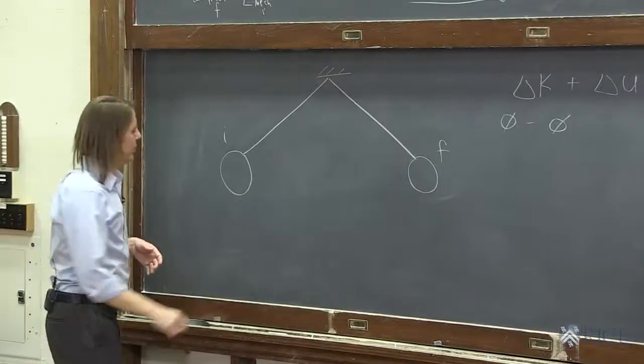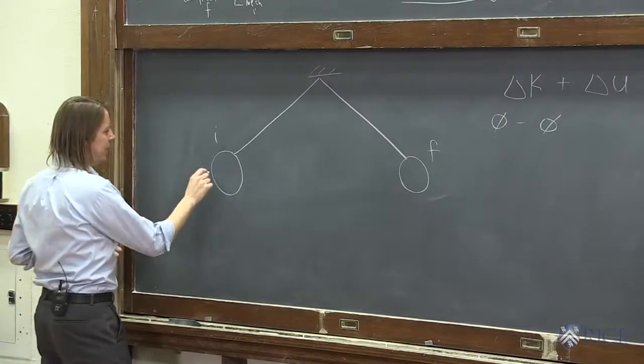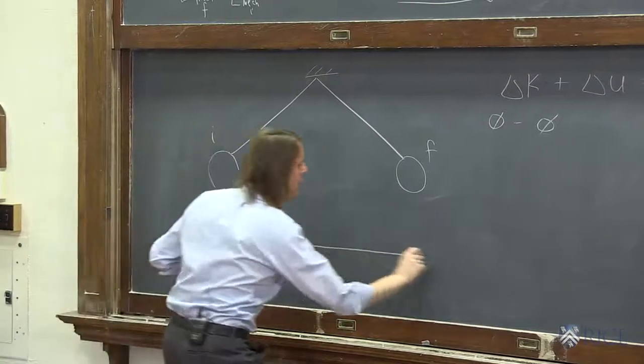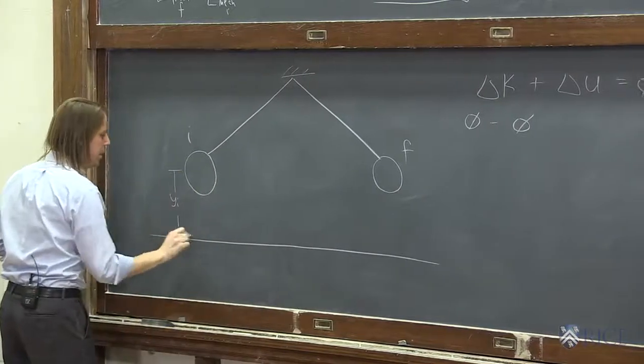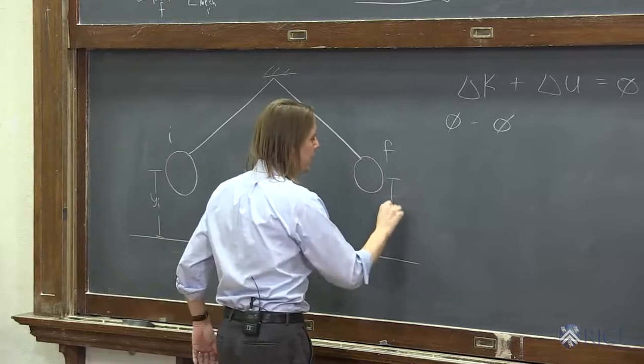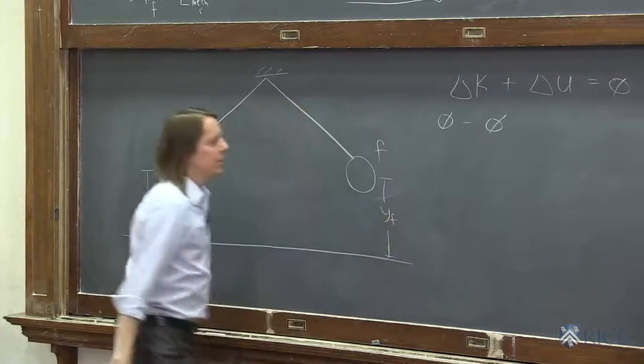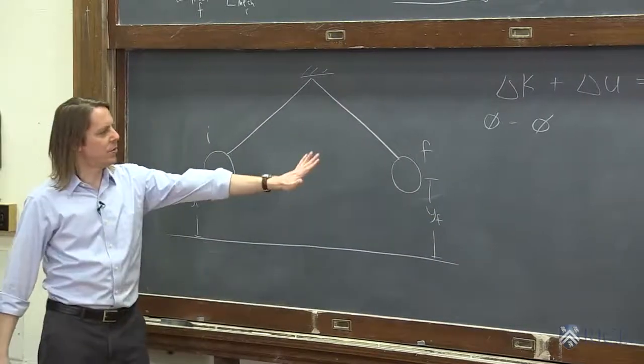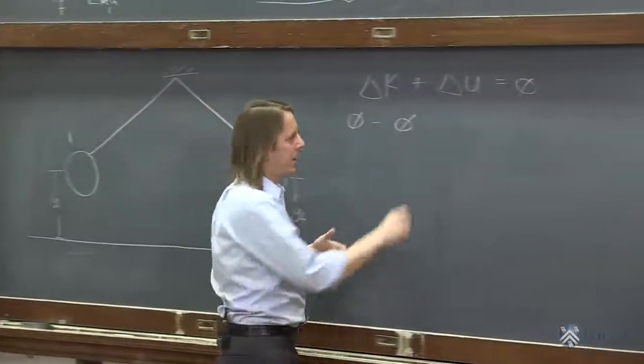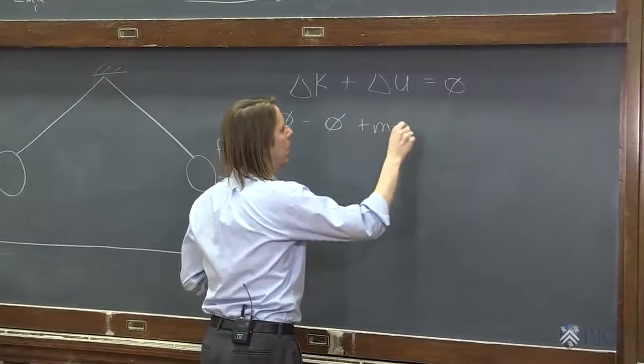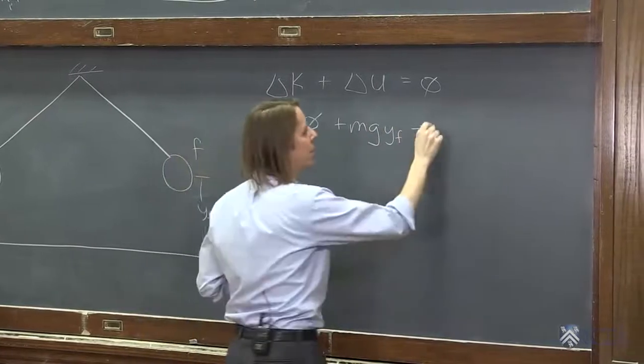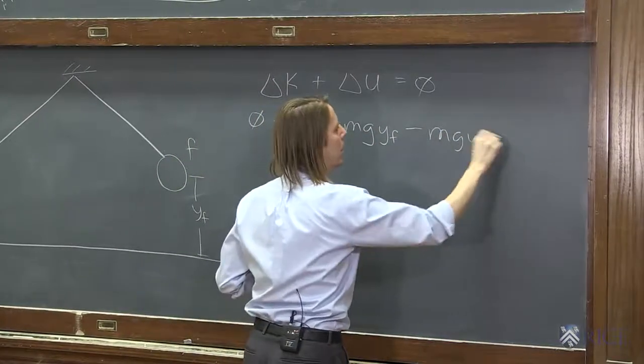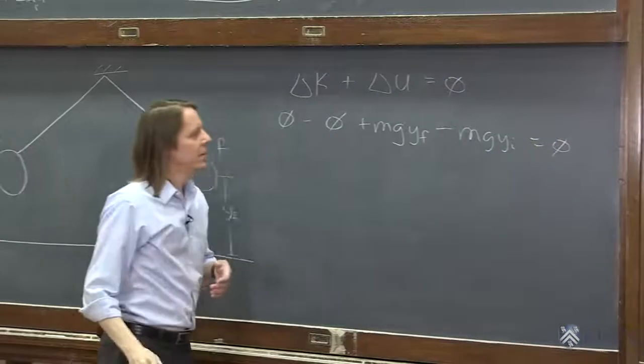For the height, we'll say we started it above the ground at some height yi. And we'll say it's going to end up at some height yf. So the potential energies are final is mgyf minus initial mgyi. And all of that has to equal 0.